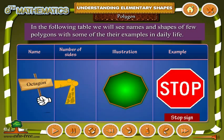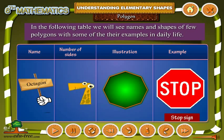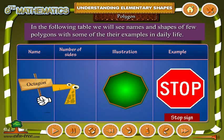Octagon — number of sides is 7. Illustration, for example: Stop sign.